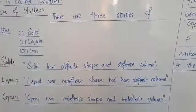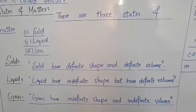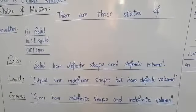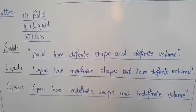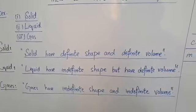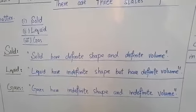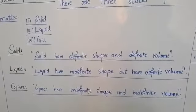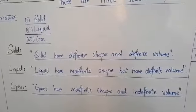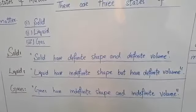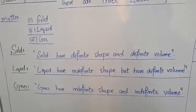That means the shape of the container of the liquid, it will adopt its shape. That is why the shape of the liquid is indefinite. It is not a permanent shape, it can change. After that, we have the last state of matter, which is gas. Gases have indefinite shape and indefinite volume. The shape of the gas is not permanent and the volume is not permanent. The gas will adopt the shape of the container and the volume of the container.